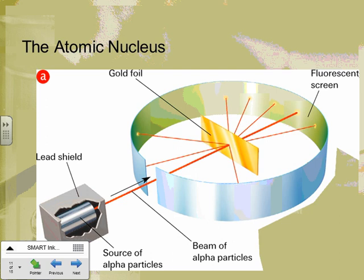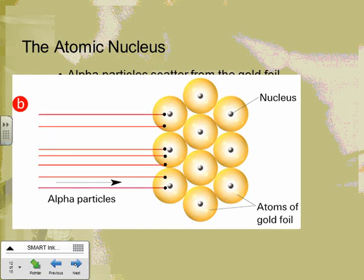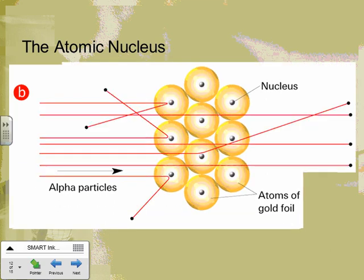The particles aren't hitting the plums — plums are not going to stop this alpha radiation. They must be hitting something more dense, more concentrated, and more massive than that. So most particles went straight through, but some were hitting something in the center of these atoms and bouncing back.